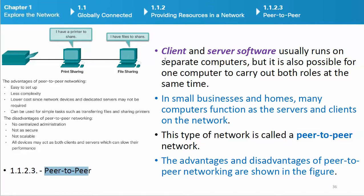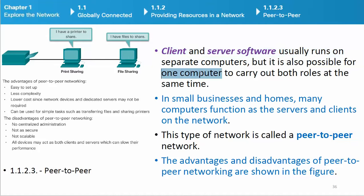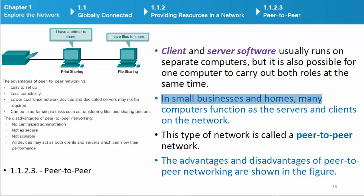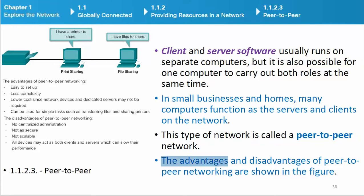Peer-to-peer: Client and server software usually runs on separate computers, but it is also possible for one computer to carry out both roles at the same time. In small businesses and homes, many computers function as both servers and clients on the network. This type of network is called a peer-to-peer network.